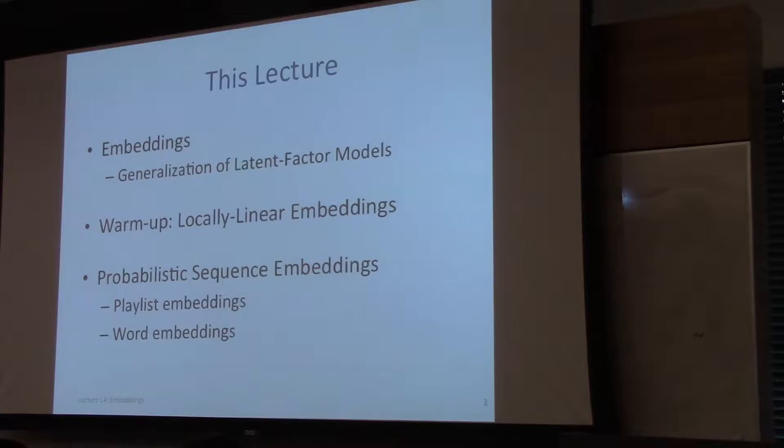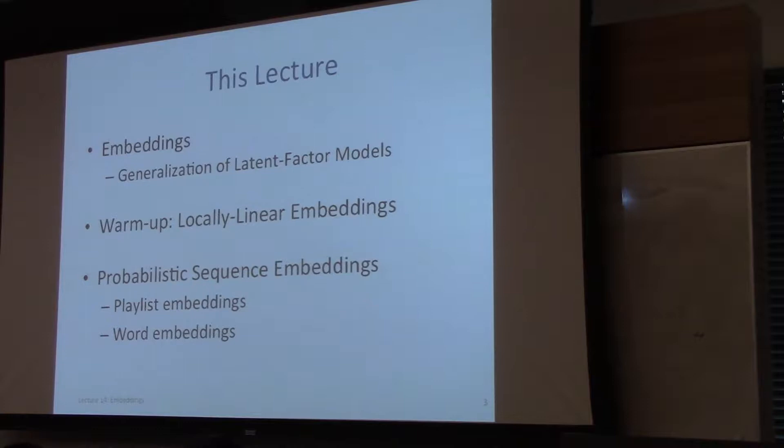In this lecture, as a warm-up, we'll first look at locally linear embeddings, which is probably — at least on a conceptual level — the simplest notion of embeddings, which doesn't even depend necessarily on machine learning per se. It's something that's more fundamental than machine learning. Then we'll look in more detail at probabilistic sequence embeddings, such as playlist embeddings over songs and word embeddings over sentences — both sequences of items.